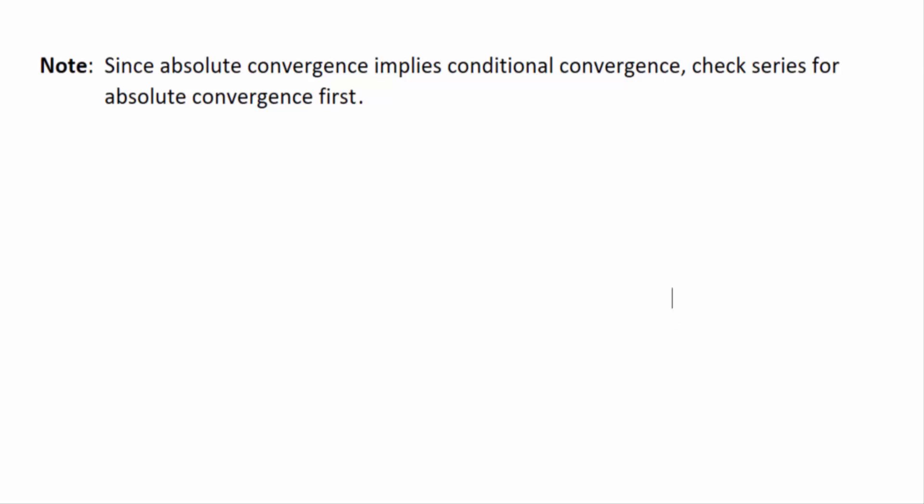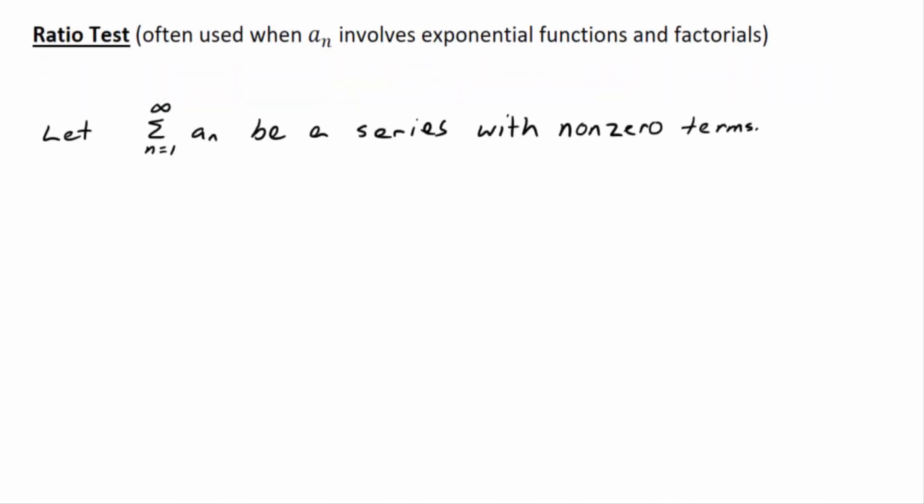So, when applicable, check for absolute convergence first. That's what the note should say. So, this is the most important test, by the way, so far. This is it. Ratio test.